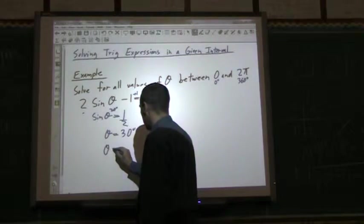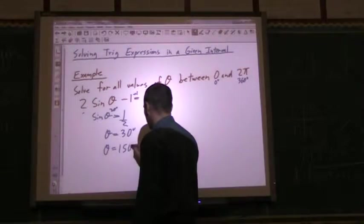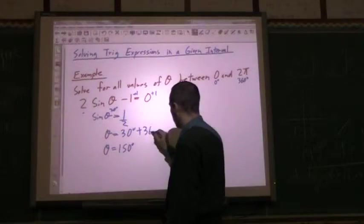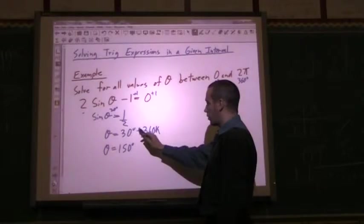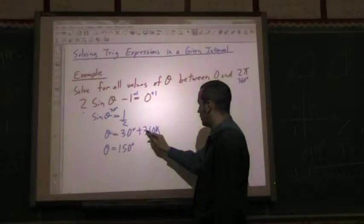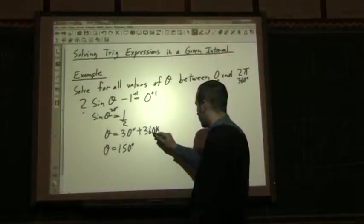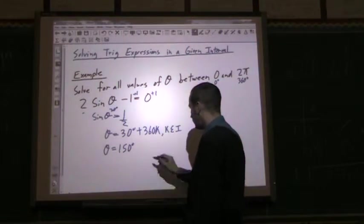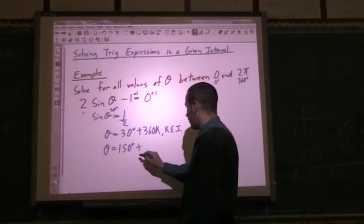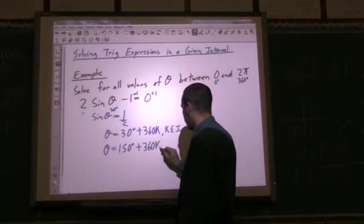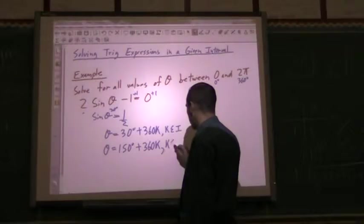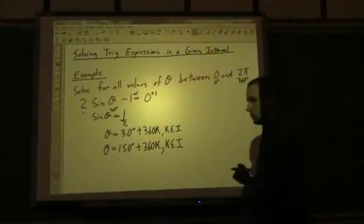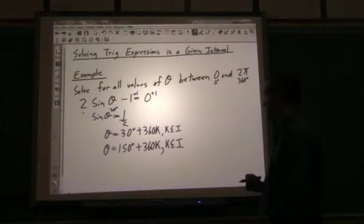So then I say one answer is theta equals 30 degrees, and the other answer is 150 degrees. Now, I put on the plus 360k, because it can be 30 degrees, or any coterminal angle with 30 degrees, which is the plus 360k, where k can be any integer. And then the same with 150. It can be 150, or any coterminal angle with that 150. Now, this would be the solution we'd be done right here if it just asked for all possible solutions.